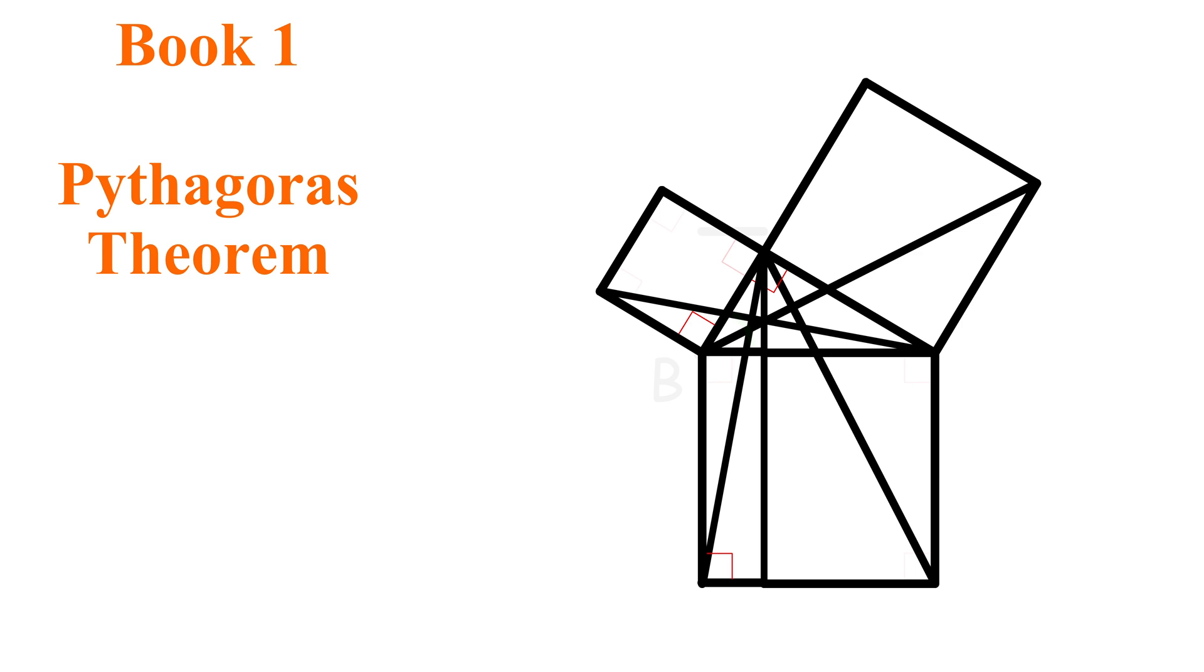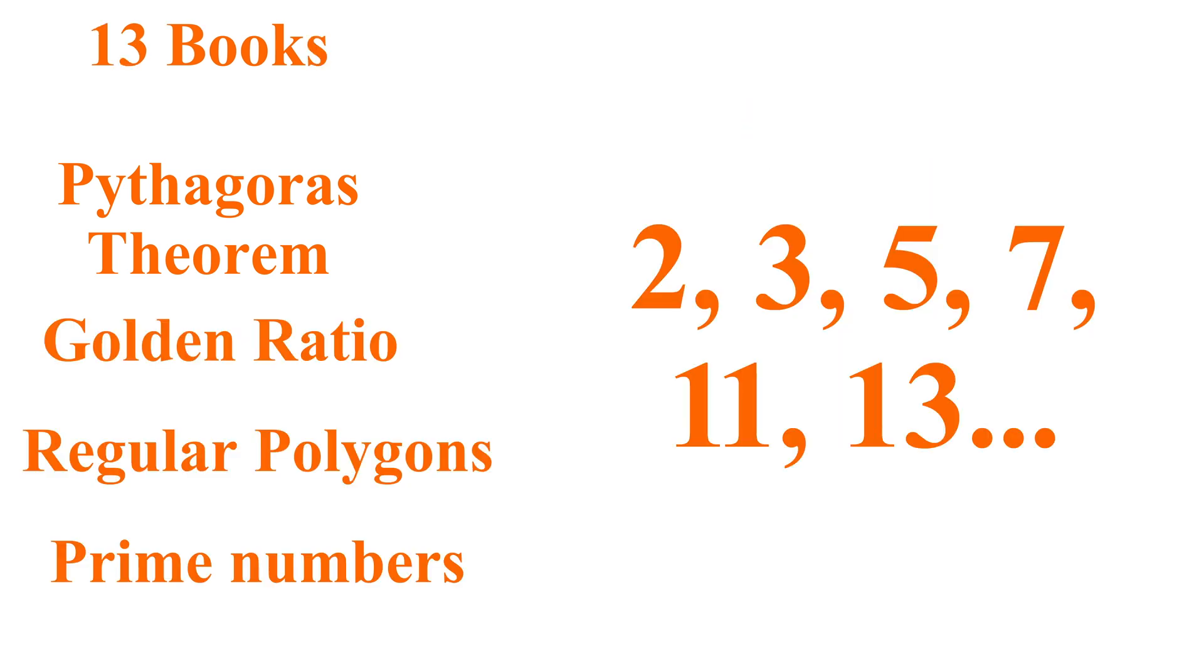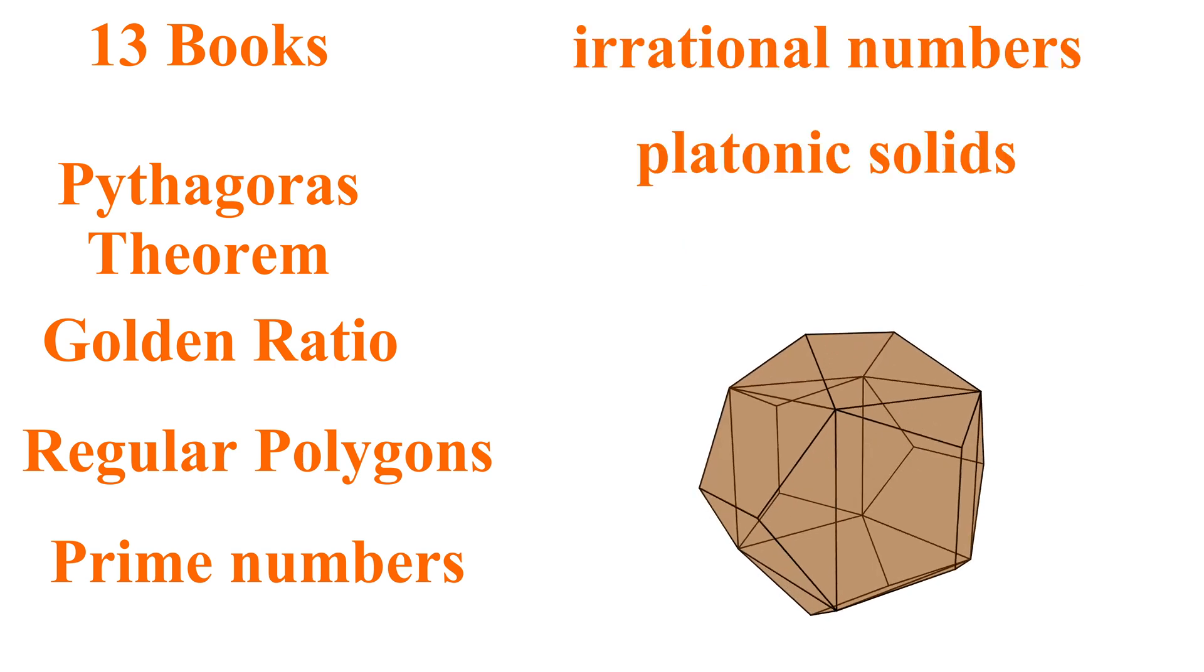Euclid's Elements did not only prove the Pythagorean Theorem, but the rest of the books are used to teach about the golden ratio, regular polygons, prime numbers, irrational numbers, and the platonic solids.